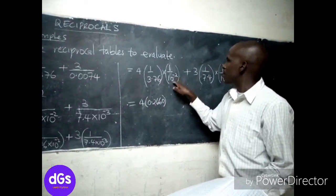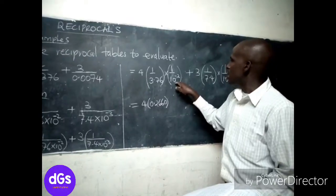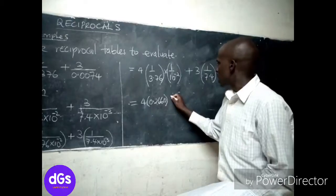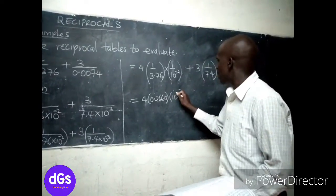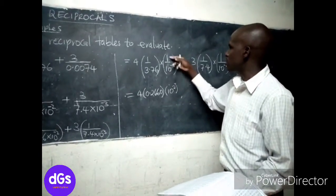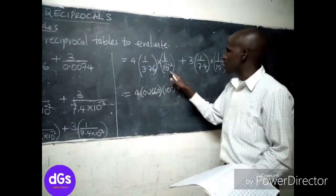Then 1 over 10 power negative 2 is just 1 over 1 over 100, so this one just goes above to be 10 power positive 2. When it is negative, you get it to the top, so this one will be 10 squared.